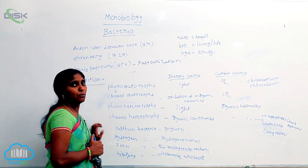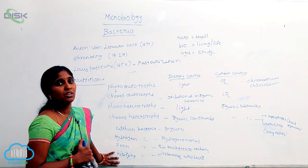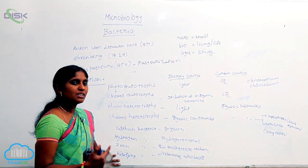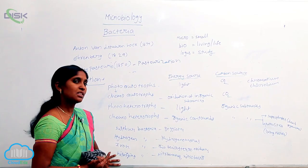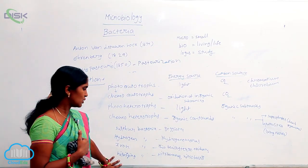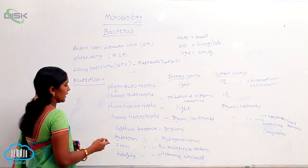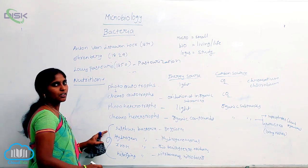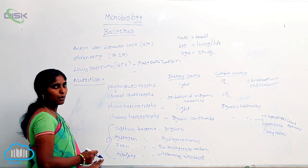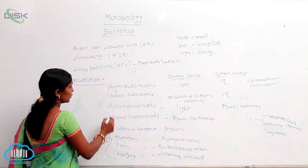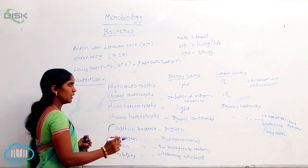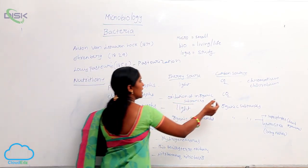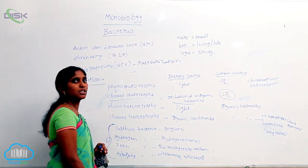Nitrifying bacteria are the best example of chemo-autotrophs. Nitrosomonas and Nitrobacter are examples. Ammonia is oxidized into nitrites by Nitrosomonas, and nitrites are converted into nitrates by Nitrobacter. These two are nitrifying bacteria. The energy source is oxidation of inorganic substances, and the carbon source is from atmospheric CO2, so they are all under the group of chemo-autotrophs.